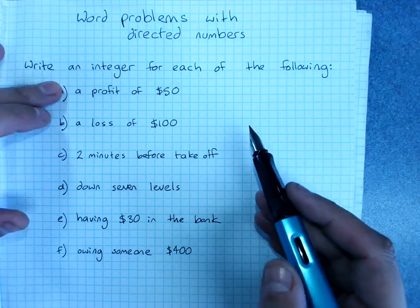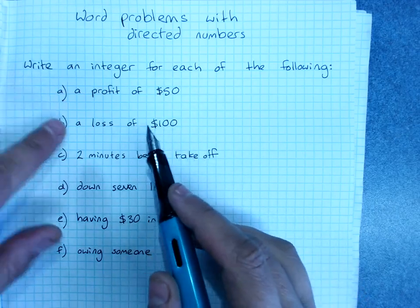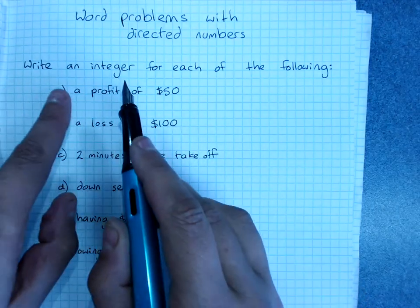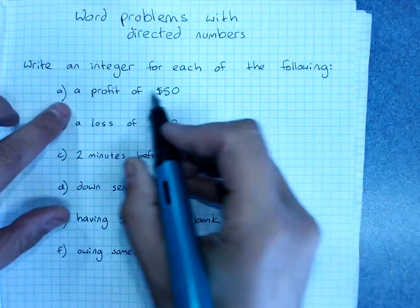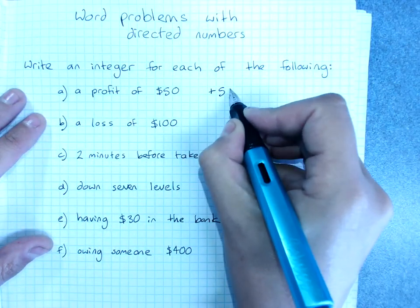Profit and loss. Which one's negative, which one's positive? Loss is moving down, profit is moving up. So a profit of $50 could be described as plus 50.